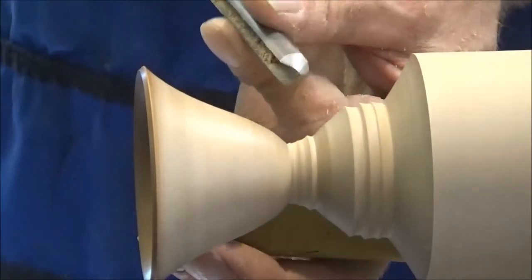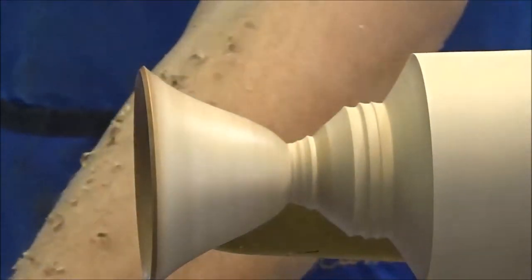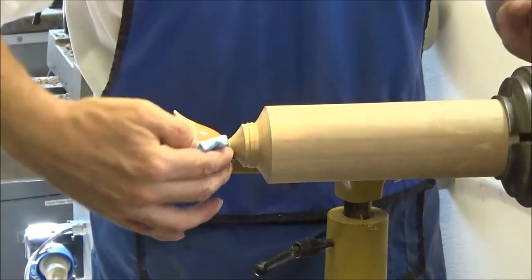Right, it's starting to get tight to get the ball gouge in there. So what we're going to do is take that out, put the spindle gouge in. Finish on.